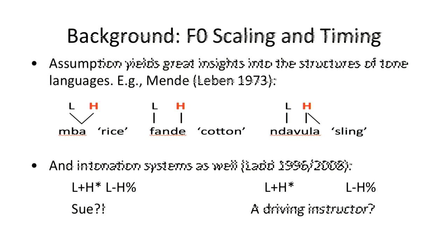In intonation systems, we get a lot of mileage out of the same kind of representational assumptions. This famous example from Bob Ladd — the incredulity contour, low low-high low-high — is going to give you a very different F0 contour whether you're realizing it on 'Sue' or 'a driving instructor.' And yet we want to be able to say that those are instances of the same linguistic category — the same phonological categories are being used, and they happen to sound different depending on how we're realizing them.